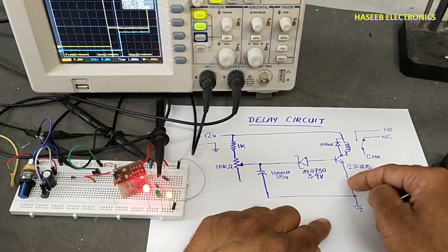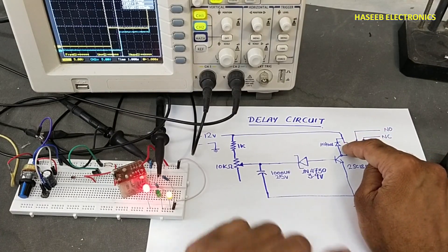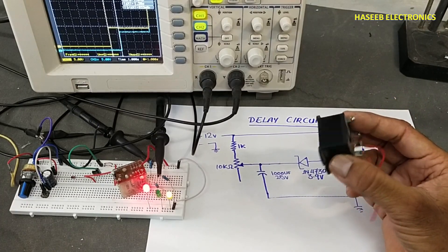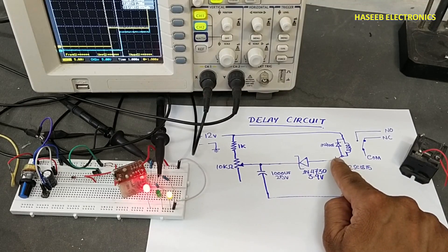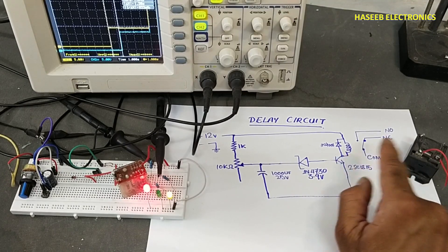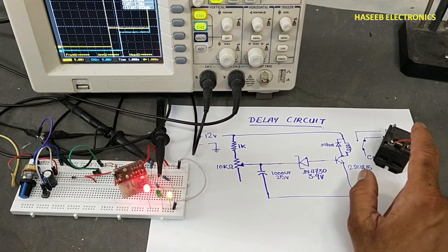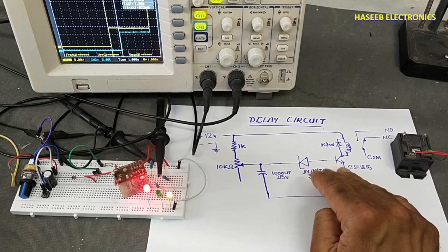We have this transistor here and we are driving this load, this relay. How much is the load current? If I am using this relay it will need 100 milliamps here. At that time I will use this transistor approximately 1.5 times or two times more than this relay current. If it is 100 milliamps here, I will use 200 or 150 milliamps here for the transistor.